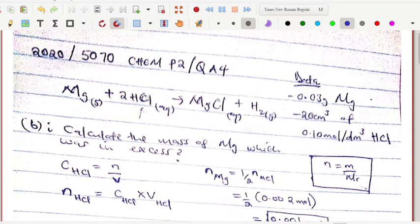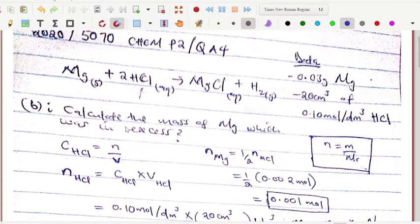The question was asking you to calculate the mass which was in excess. This was the data in the question - I've just summarized. They gave the mass of magnesium and also the volume and the concentration of the acid. So when you add this and that, those are the results.